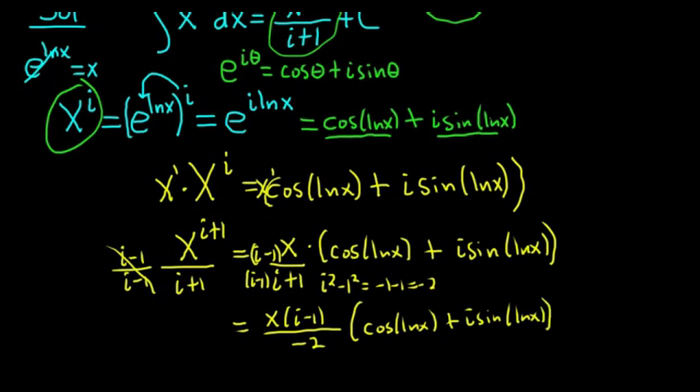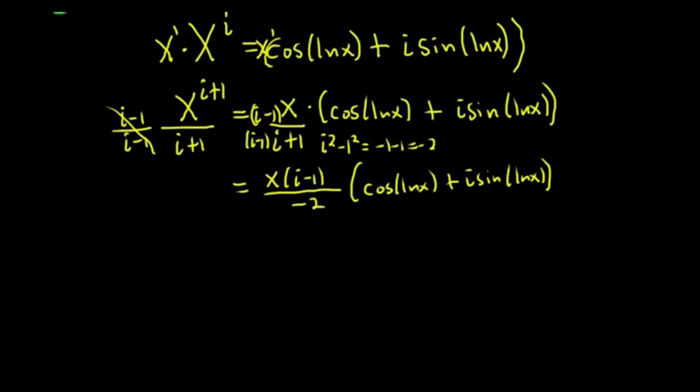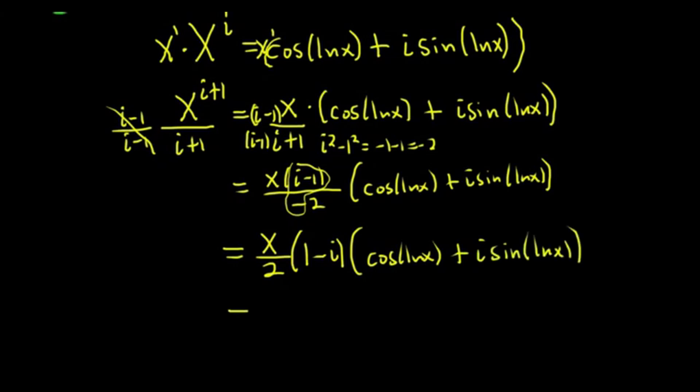And now let's go ahead and distribute stuff. How about before I do that, I'm going to put the negative upstairs and flip stuff. So this is x over 2. This might be cleaner. 1 minus i. And then cosine ln x. Plus i sine ln x. We have to distribute the i minus 1 to clean stuff up.